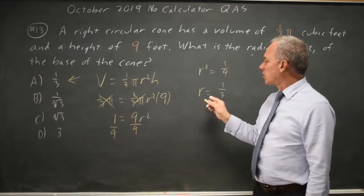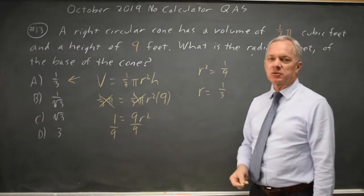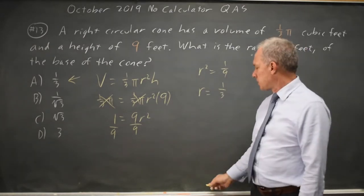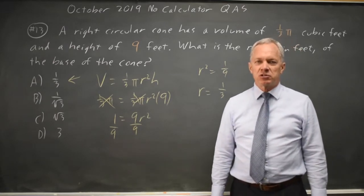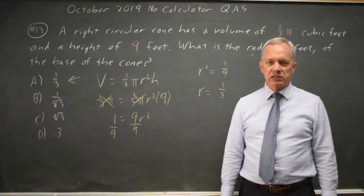Mathematically we might get r equals plus or minus one-third if r squared equals one-ninth, but we know that this is a radius so it can't be a negative number. So our choice would be the radius is one-third, choice A.